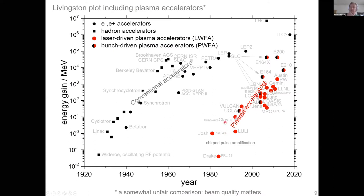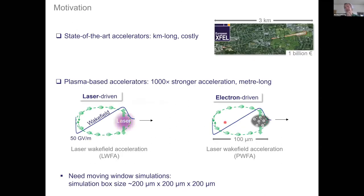You can add the progress of plasma accelerators to the Livingston plot, showing a steep learning and success slope for plasma accelerators in red. This is somewhat an unfair comparison since it only regards energy gain and not beam quality, but if we include beam quality in such a plot in the future, plasma accelerators may look very impressive. The motivation: state-of-the-art accelerators are kilometer-long and costly — one billion in whatever currency — while plasma-based accelerators have a thousand times stronger accelerating field and can be meter-long.